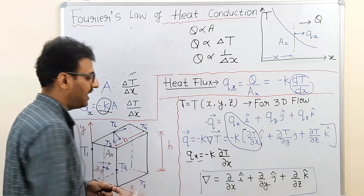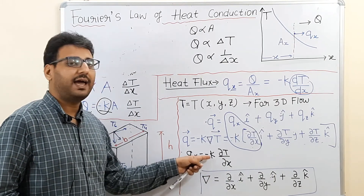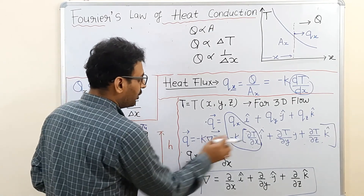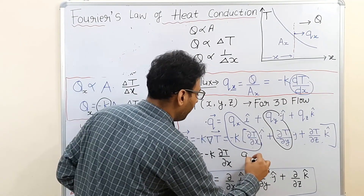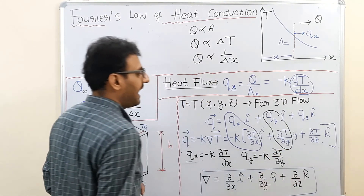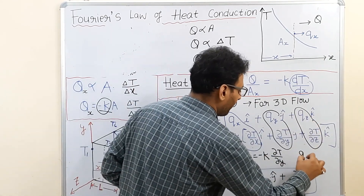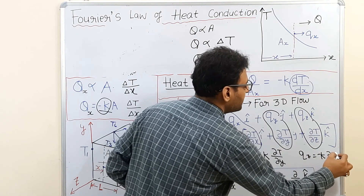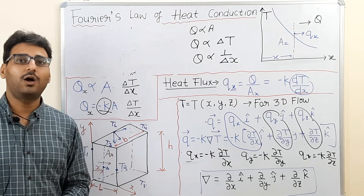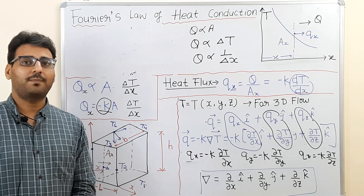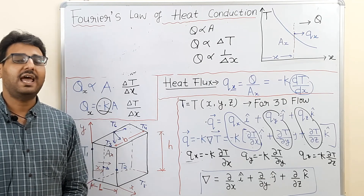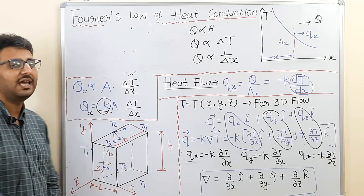Substituting the del operator, heat flux in x direction is q_x = −k (∂T/∂x), in y direction q_y = −k (∂T/∂y), and in z direction q_z = −k (∂T/∂z). Heat flux in each direction is directly proportional to the temperature gradient in that direction. These are the formulas for heat flux in 3D flow. In the next lecture we will discuss thermal conductivity and thermal diffusivity. Thank you.